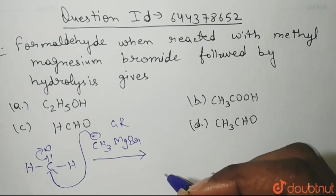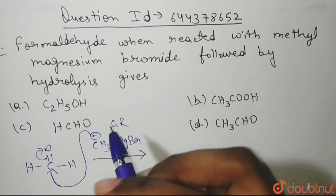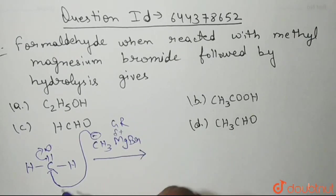So what will be the product formed here? O will get a negative charge here. And Mg has a delta positive charge. So O will form a bond with magnesium.